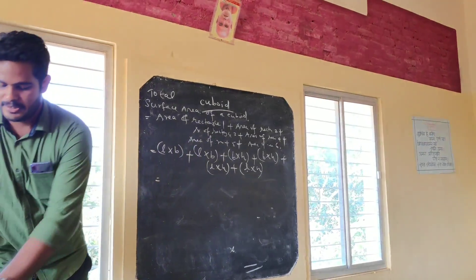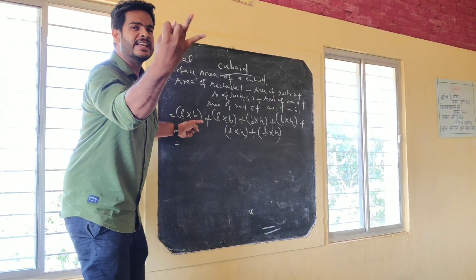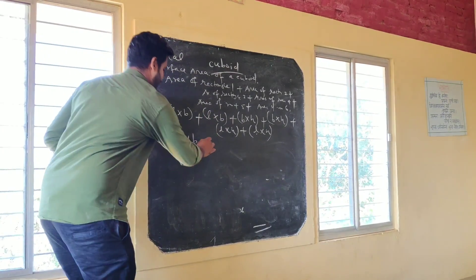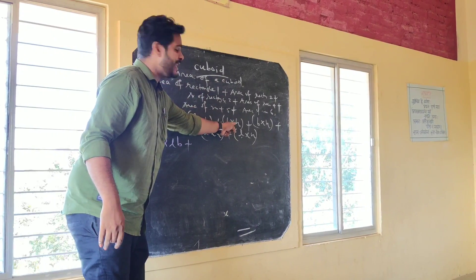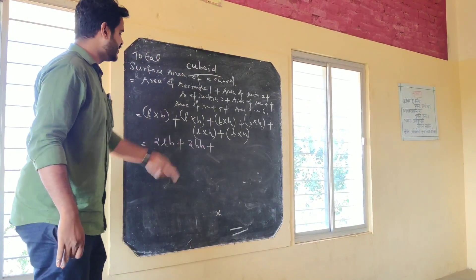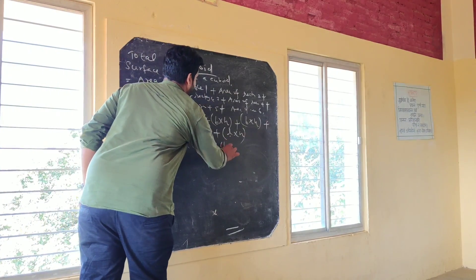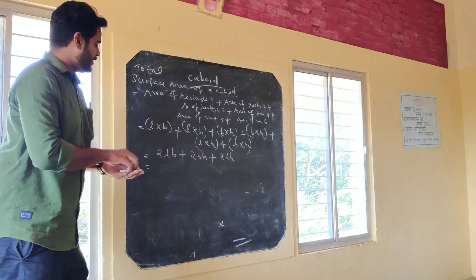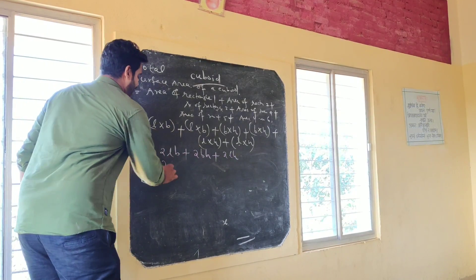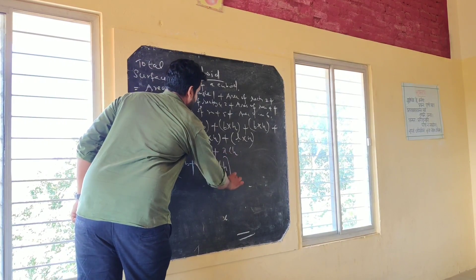So, total surface area equals L into B plus L into B, which gives 2LB, plus B into H plus B into H, which gives 2BH, plus L into H plus L into H, which gives 2LH. Taking 2 as a common factor outside, we get: 2 into (LB + BH + LH). This is the formula for finding the total surface area of a cuboid.